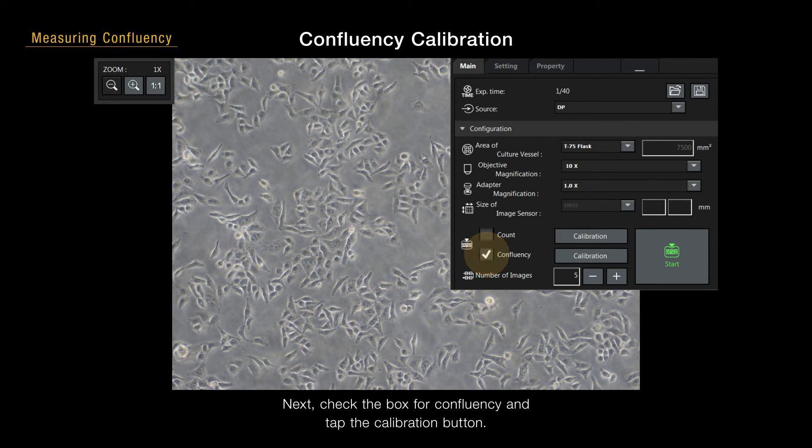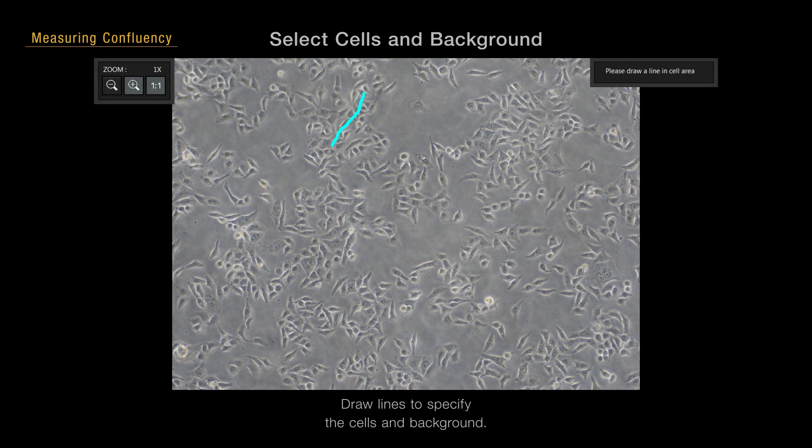Next, check the box for confluency and tap the calibration button. Draw lines to specify the cells and background.